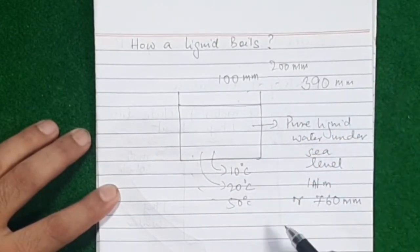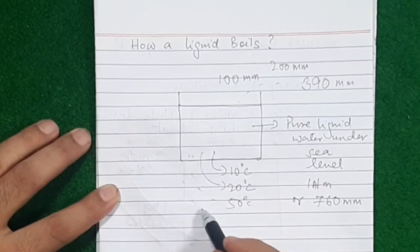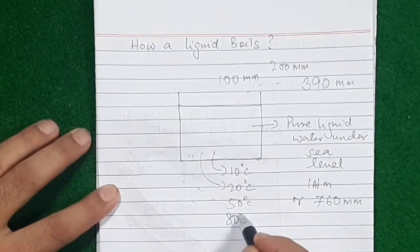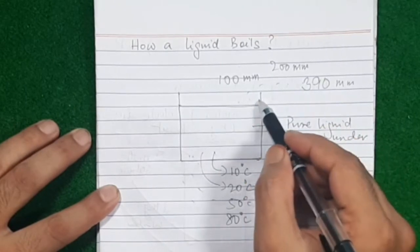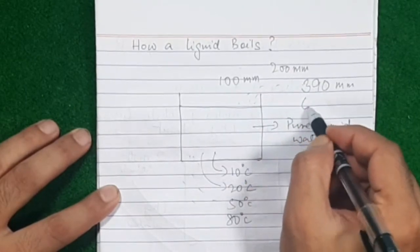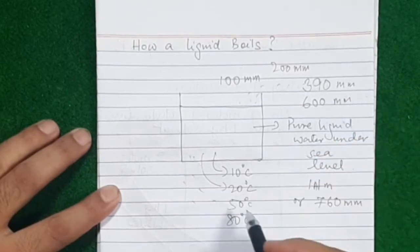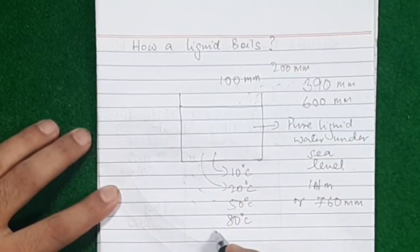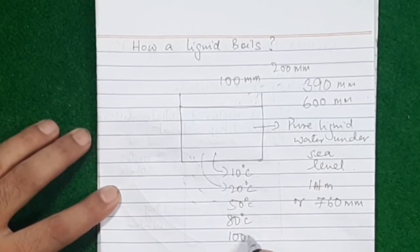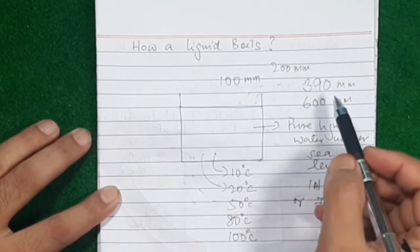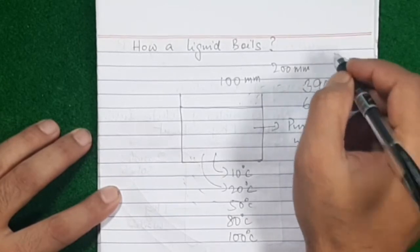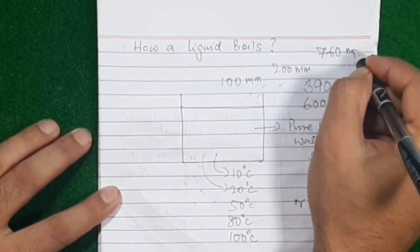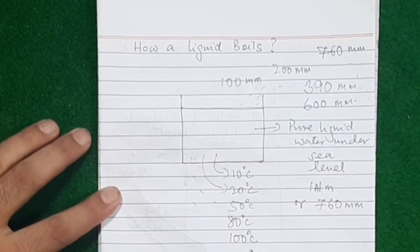Beyond 50 degrees, heating up to 80 degrees Celsius, the vapor pressure rises further beyond 390 — let's say it increases to around 600 mm. If you keep on heating, when it reaches 100 degrees Celsius, the vapor pressure rises further beyond 600, and now the vapor pressure becomes 760 mm.